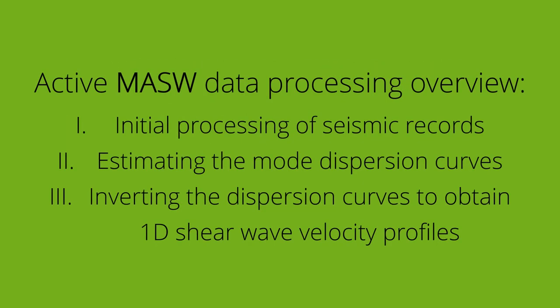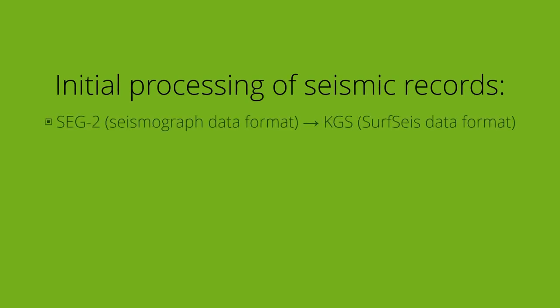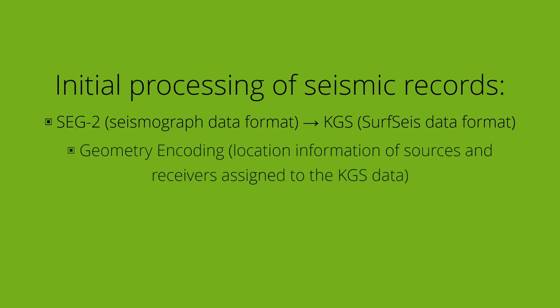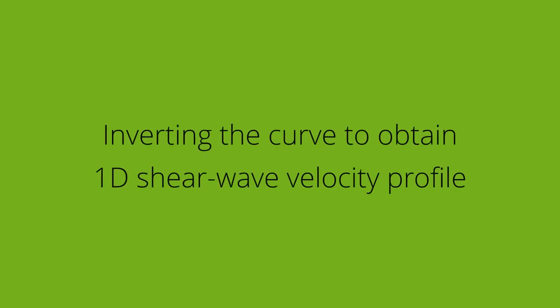The processing of MSW data is typically performed in three steps. First, initial processing of seismic records. Second, estimating the mode dispersion curves. Third, inverting these curves to obtain 1D shear wave velocity profiles.